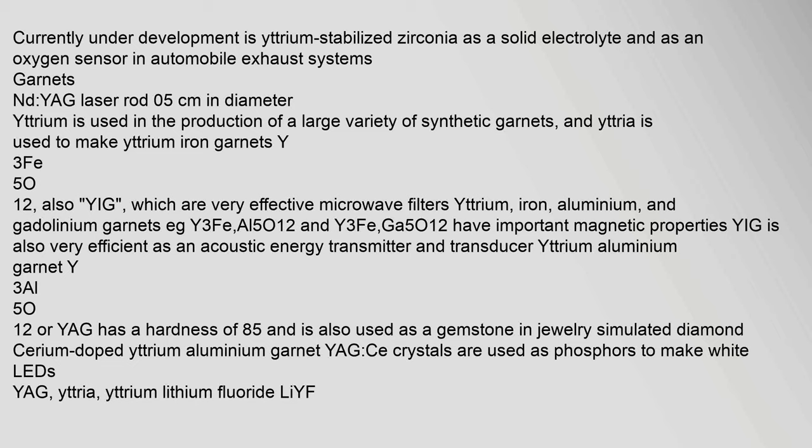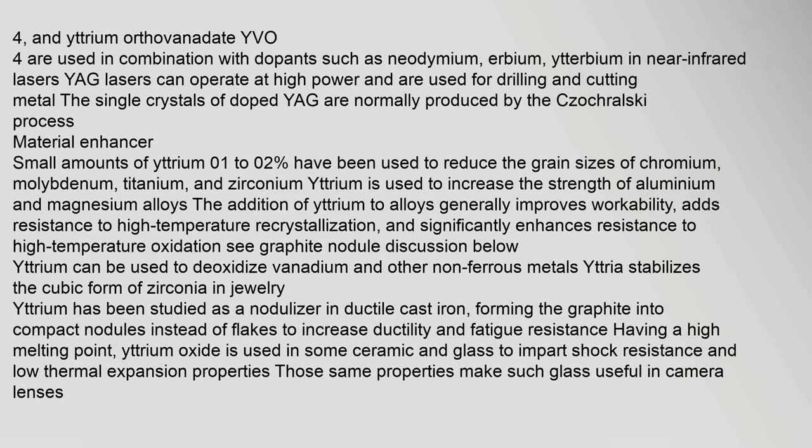Currently under development is yttrium-stabilized zirconia as a solid electrolyte and as an oxygen sensor in automobile exhaust systems. Yttrium is used in the production of a large variety of synthetic garnets, and yttria is used to make yttrium iron garnets Y3Fe5O12 (YIG), which are very effective microwave filters. Yttrium, iron, aluminium, and gadolinium garnets have important magnetic properties; YIG is also very efficient as an acoustic energy transmitter and transducer. Yttrium aluminium garnet (YAG) has a hardness of 8.5 and is used as a gemstone in jewelry as simulated diamond. Cerium-doped YAG crystals are used as phosphors to make white LEDs. YAG, yttria, yttrium lithium fluoride (LiYF4), and yttrium orthovanadate (YVO4) are used in combination with dopants such as neodymium, erbium, and terbium in near-infrared lasers. YAG lasers can operate at high power and are used for drilling and cutting metal.